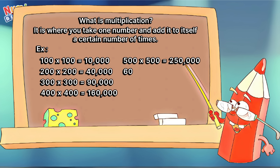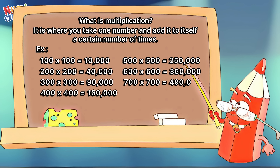600 times 600 is equals to 360,000. 700 times 700 is equals to 490,000. 800 times 800 is equals to 640,000.